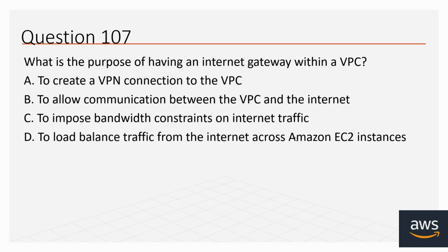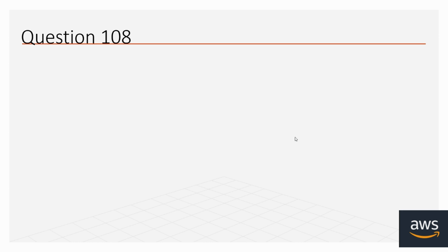Question number 107: What is the purpose of having an internet gateway within a VPC? Options: A. To create a VPN connection to the VPC. B. To allow communication between the VPC and the internet. C. To impose bandwidth constraints on internet traffic. D. To load balance traffic from the internet across Amazon EC2 instances. The correct option is B, to allow communication between the VPC and the internet.